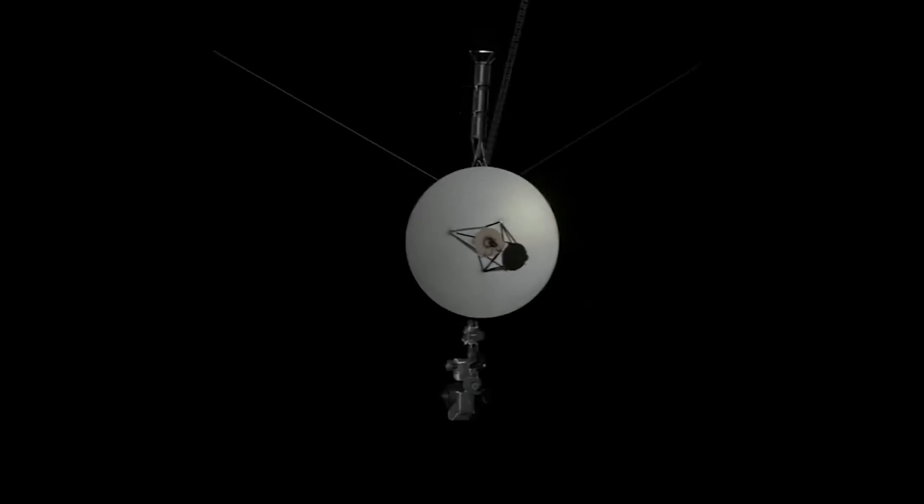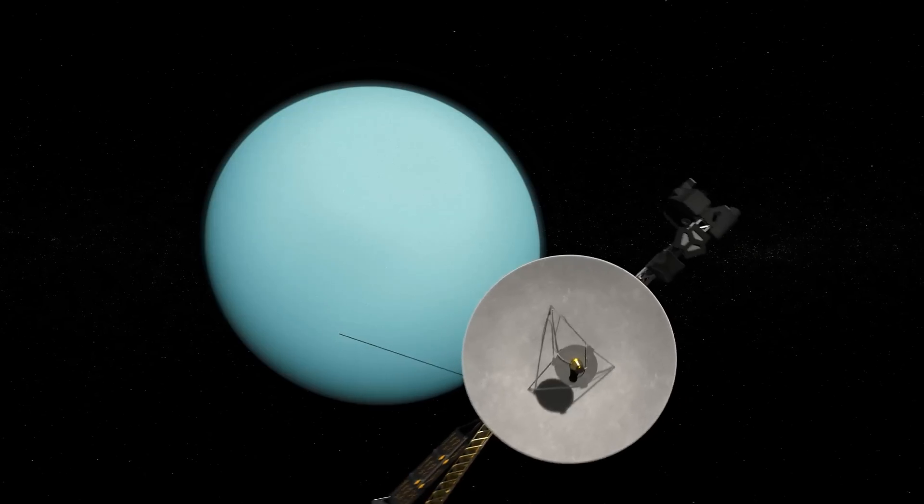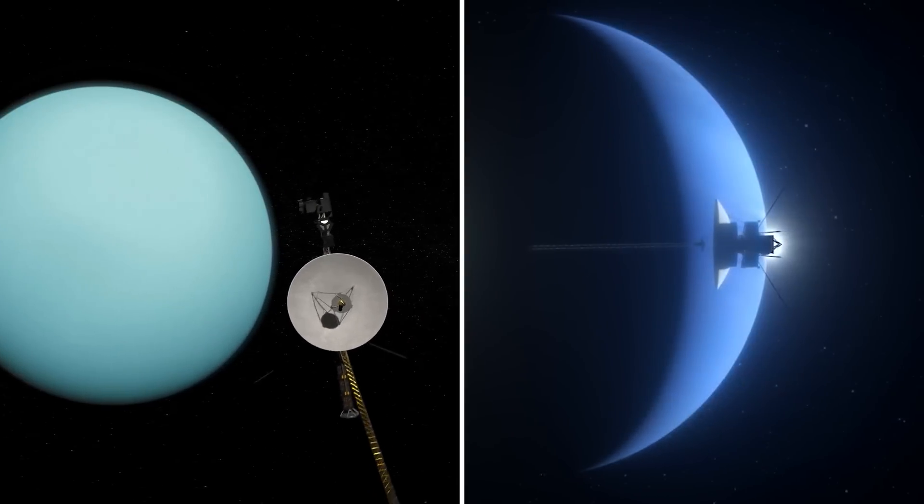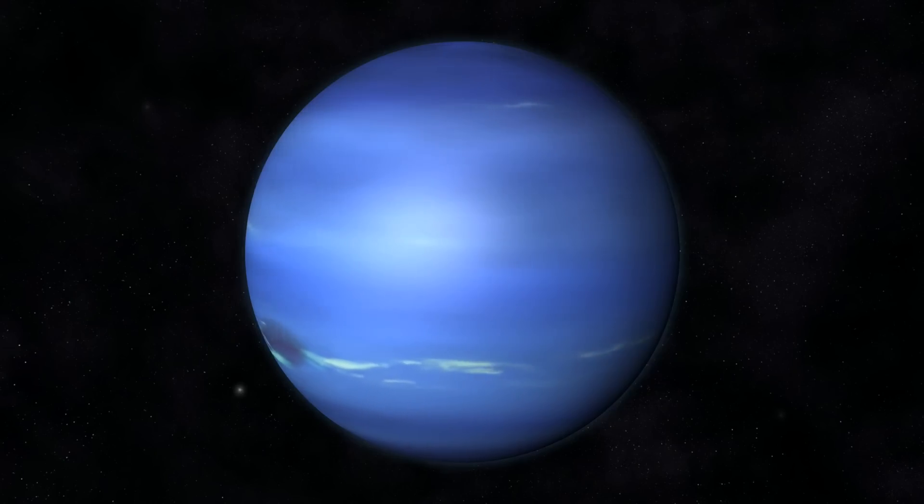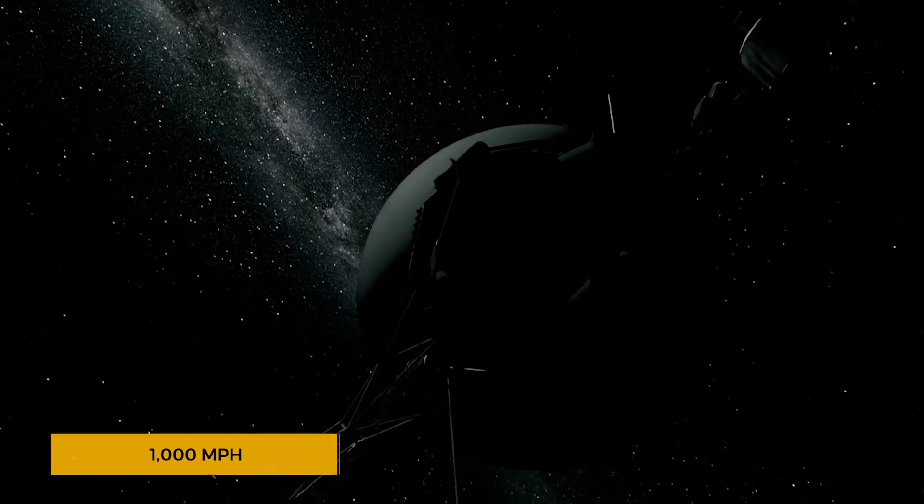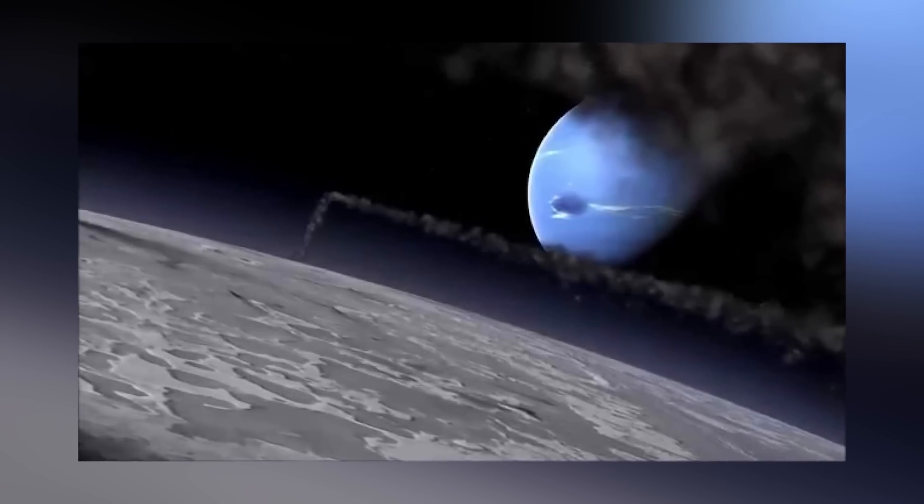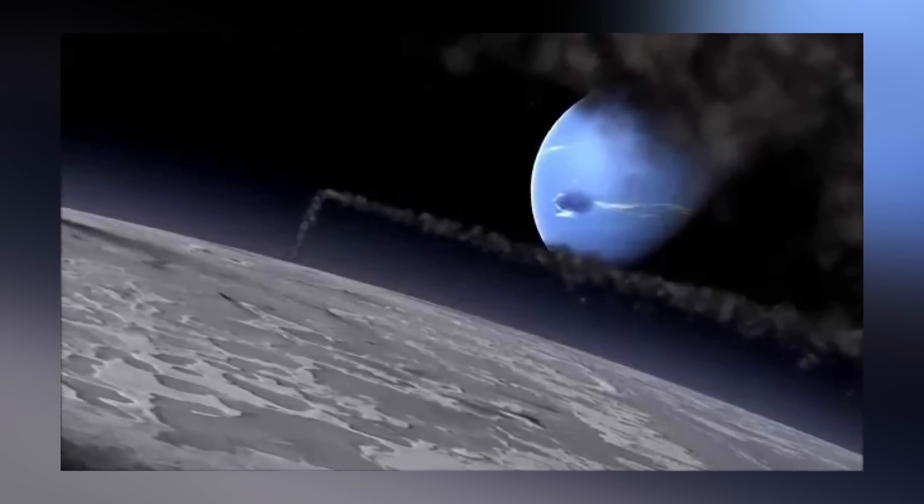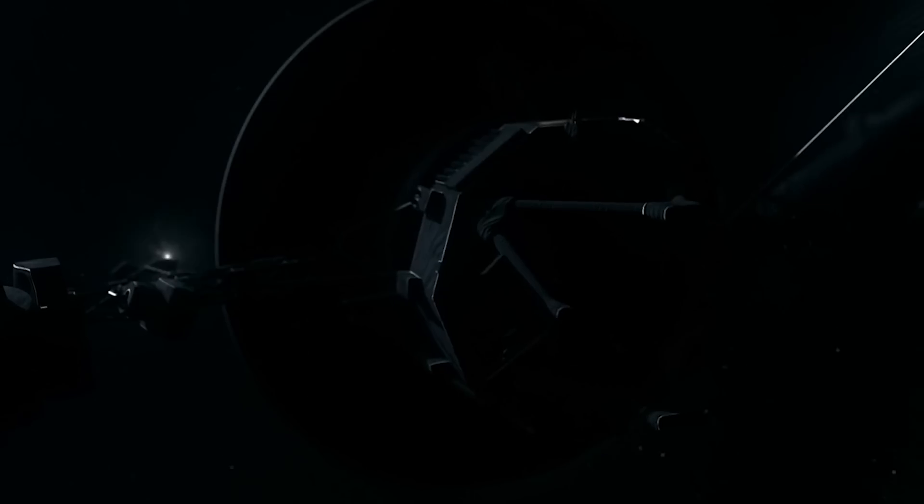Voyager 2 made history by becoming the first spacecraft to fly past Uranus and Neptune, unveiling a treasure trove of new knowledge. It captured Neptune's fierce winds, reaching speeds of up to 1,000 miles per hour, and discovered icy volcanoes on Triton, Neptune's largest moon.